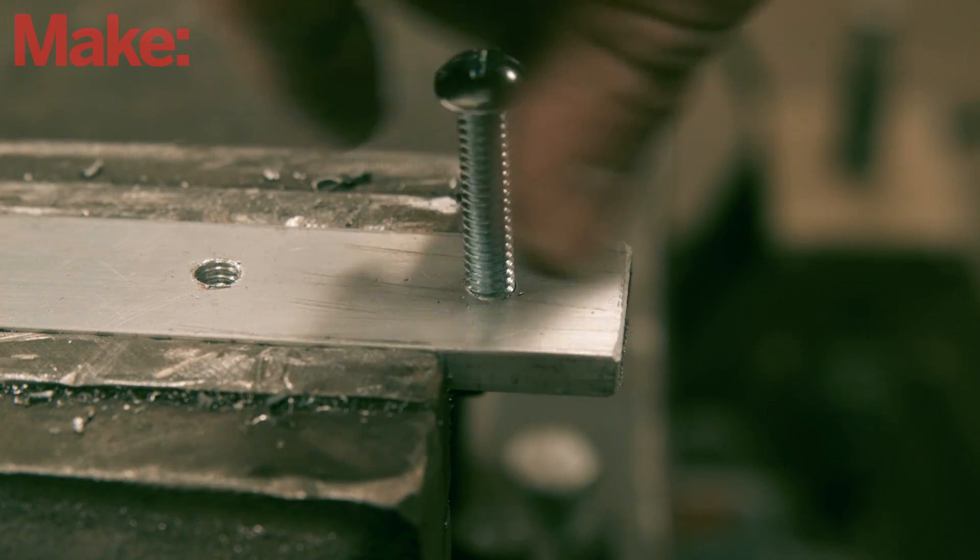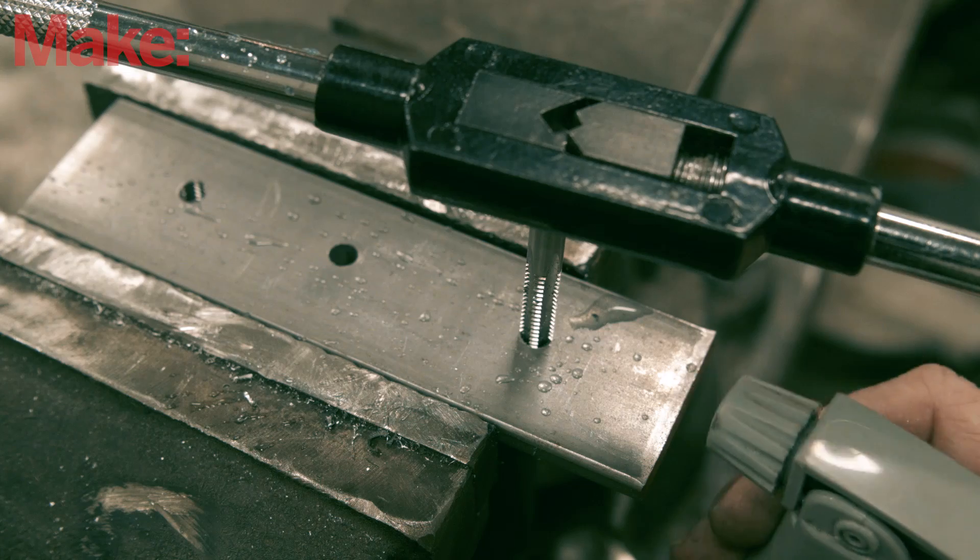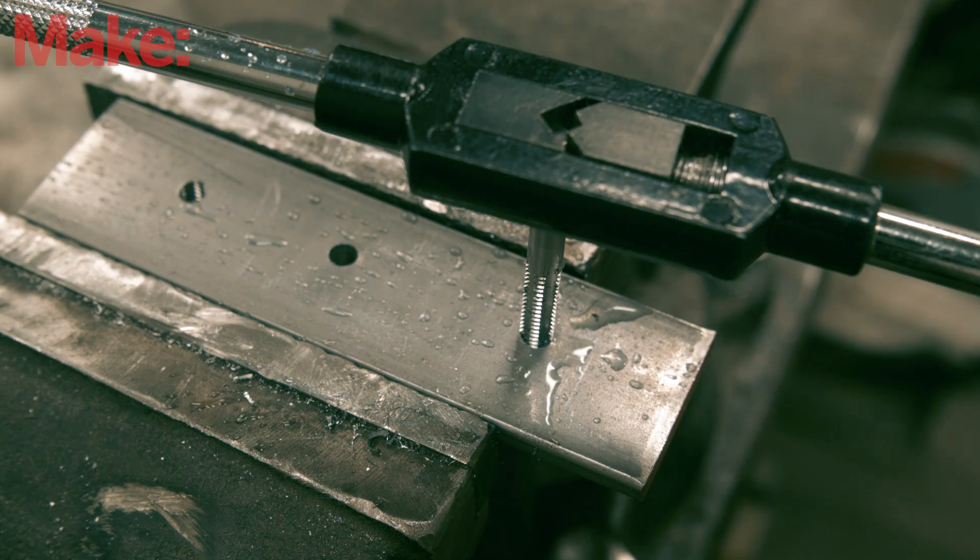If you're tapping into a soft material like aluminum, brass, or cast iron, you won't need lubrication, but if you're tapping steel, use some cutting oil to help out.